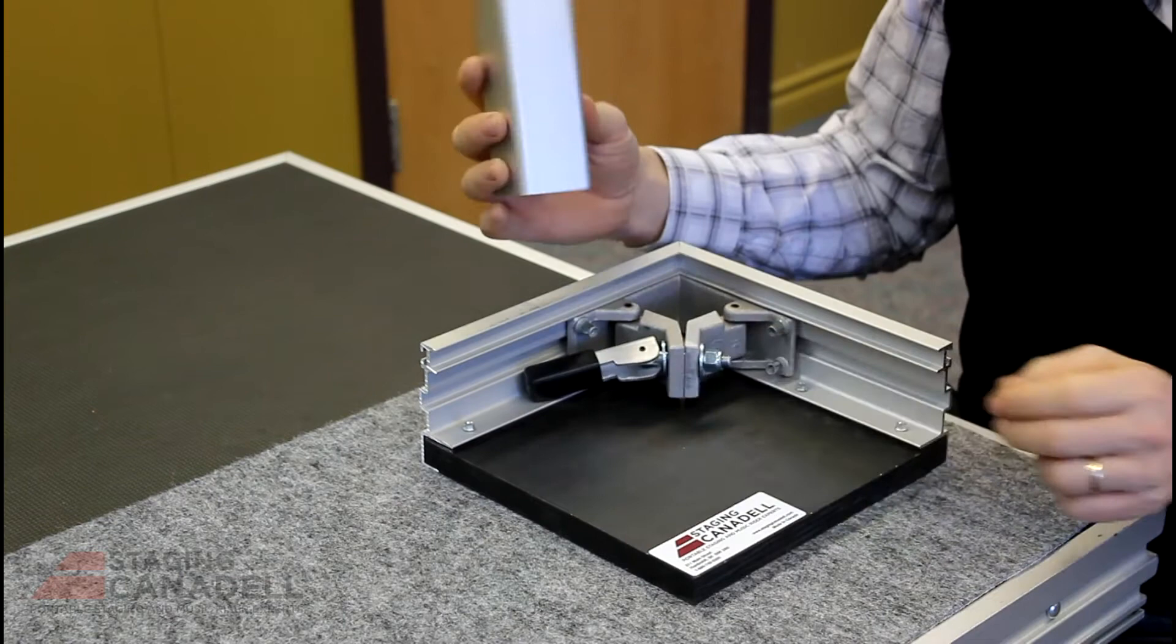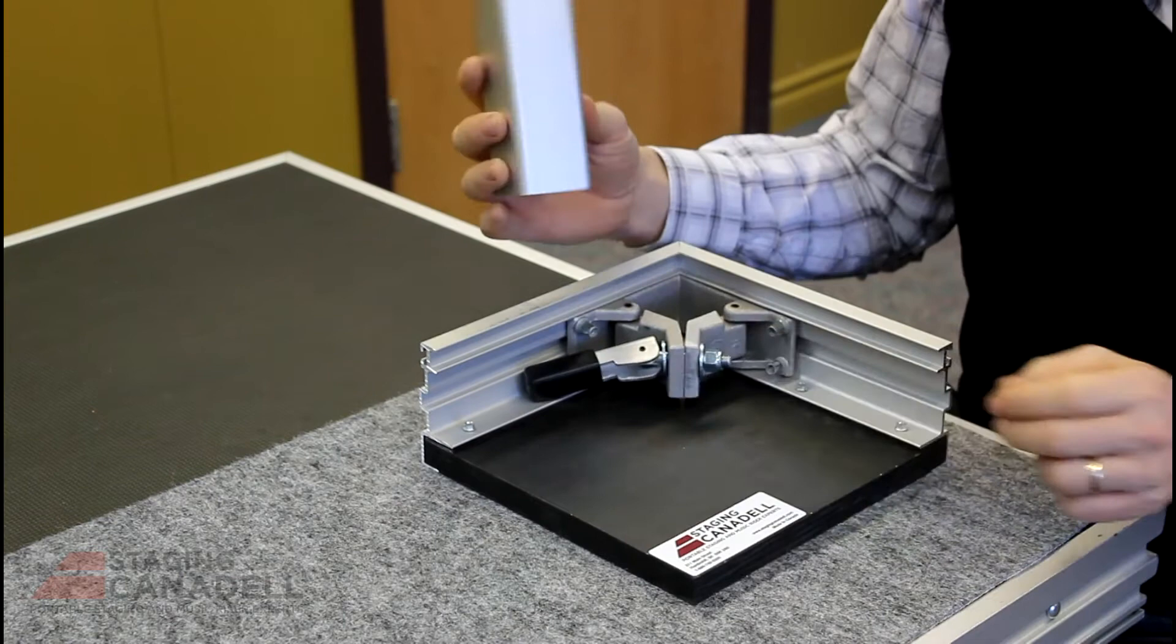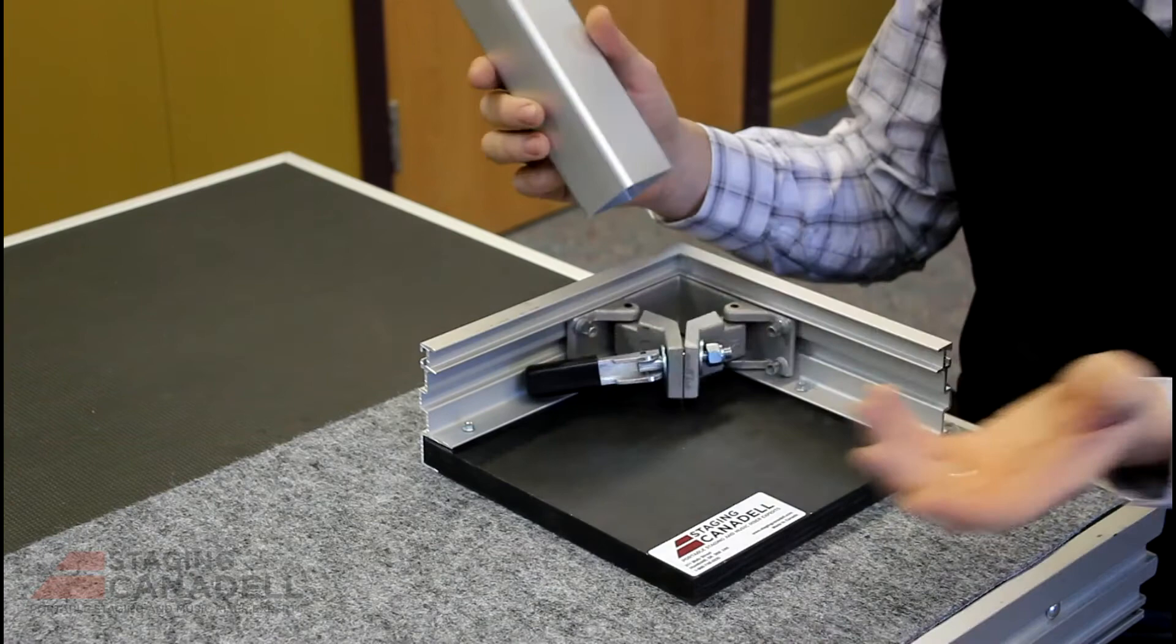This is a standard 2x2 aluminum leg, non-marking plastic cap on the top. They come in 8 inch increments but can be custom cut to any size and you can have multiple sizes so that you can have a stage at different heights.